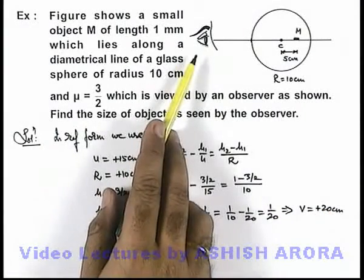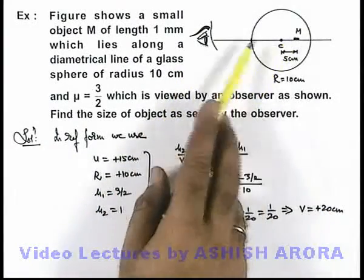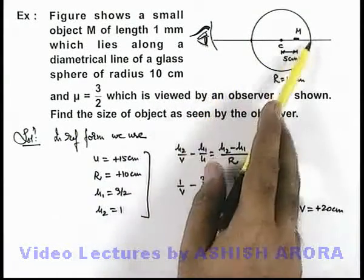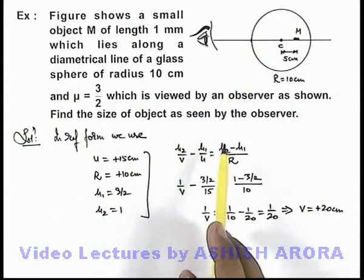That means the observer will see the object at a distance 20 centimeter from the pole of the surface, that is on the other surface of the glass sphere.